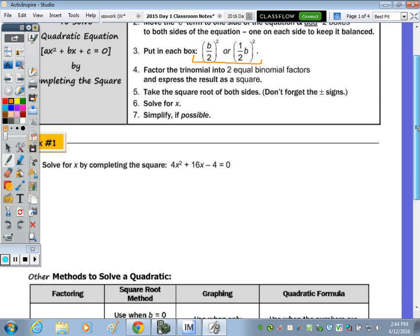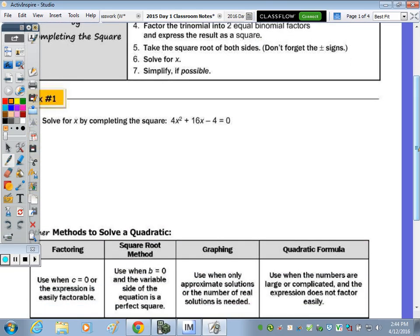So the GCF in the first one is what? Four. Now you can divide both sides by four, or you can factor it out. So it's four times X squared plus 4X minus one equals zero. But we're just looking at this trinomial to complete the square. So if I look at the first part of it, X squared plus 4X, four is the double of some number. So I'm going to bring that down, add in the box.